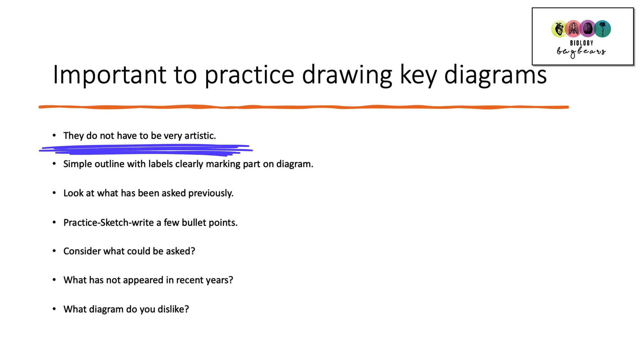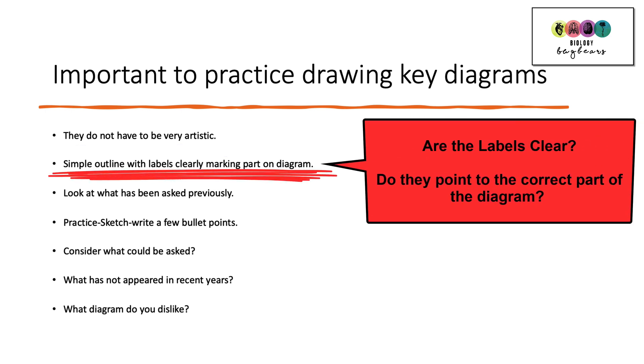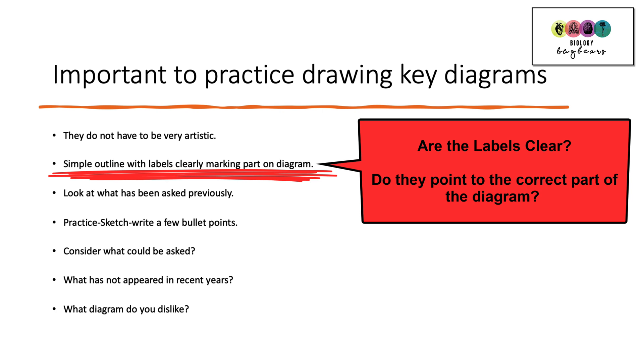Well firstly, the most important thing to remember is they don't have to be very artistic. Very basic diagrams with good, clear labels. That's the most important part. So you must be very specific in how you label. Are your labels clear? Do they point correctly and distinctly to the part of the diagram you want them to? Because there can be no room for guesswork. You will lose marks.